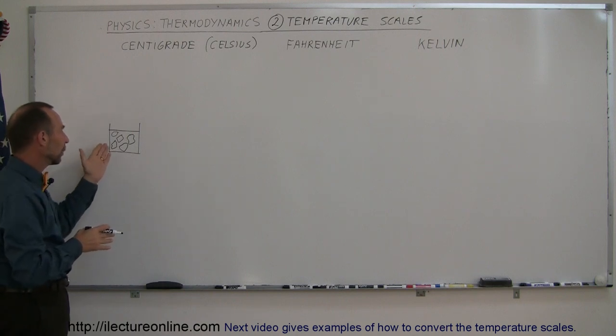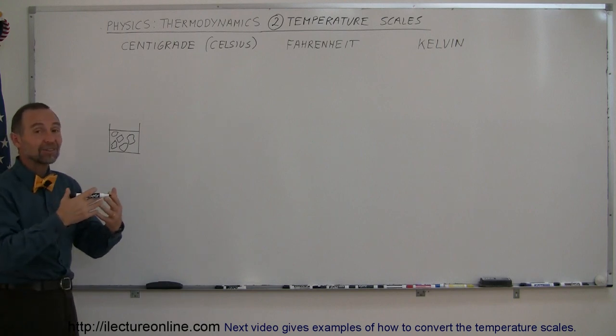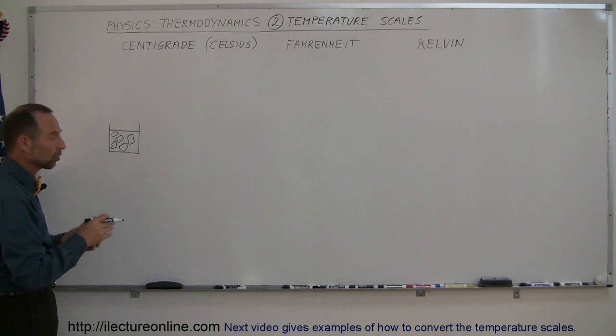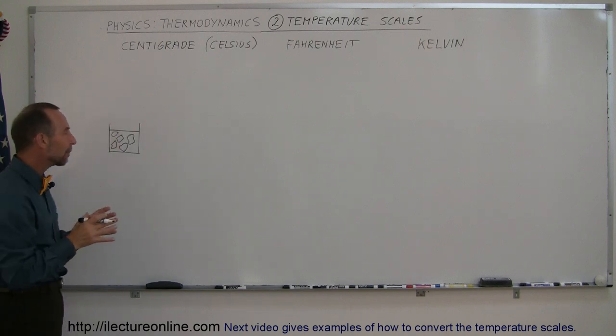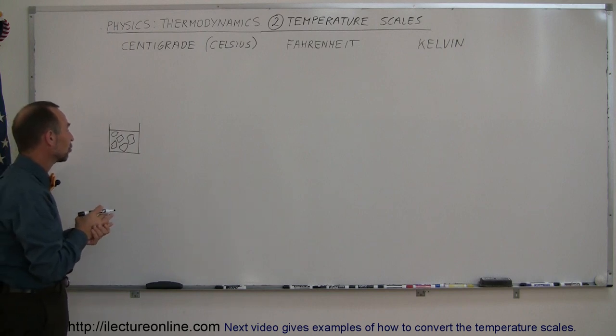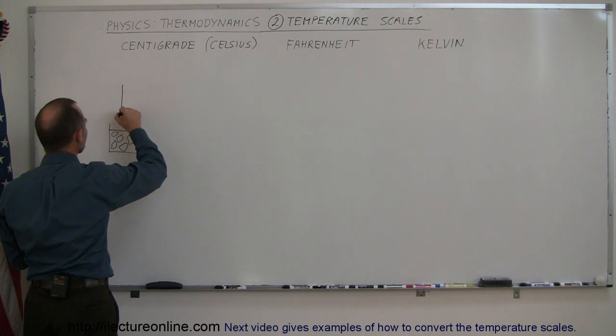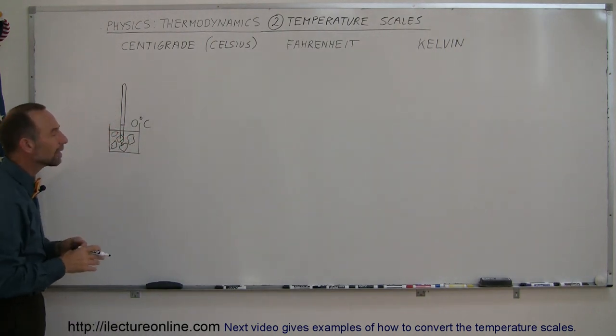And when we do that, we have either the water is freezing if it's getting colder, or the ice is melting if it's getting warmer. So it depends upon if heat is coming out or heat is going in. But whenever that happens, at standard pressure, which is standard atmospheric pressure, the temperature of that would be zero degrees centigrade. So when you stick a thermometer in there, it would read zero degrees centigrade. That's called the freezing or the melting point of water.